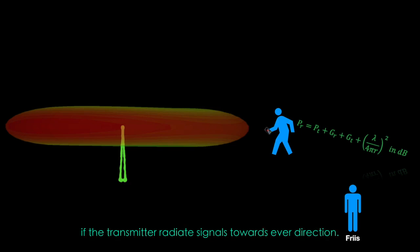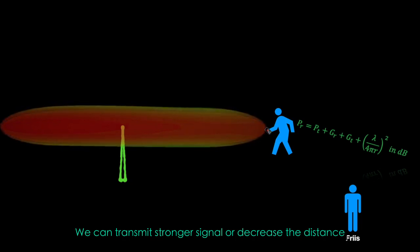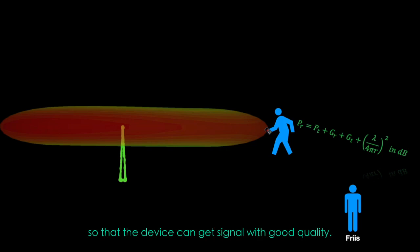In one scenario, if the transmitter radiates signals towards every direction, we can transmit a stronger signal or decrease the distance between the receiver so that the device can get a signal with good quality. But transmitting a signal might be strong enough to destroy the transmitter or disturb humans in the radiation area. It is also a tremendous waste of energy.